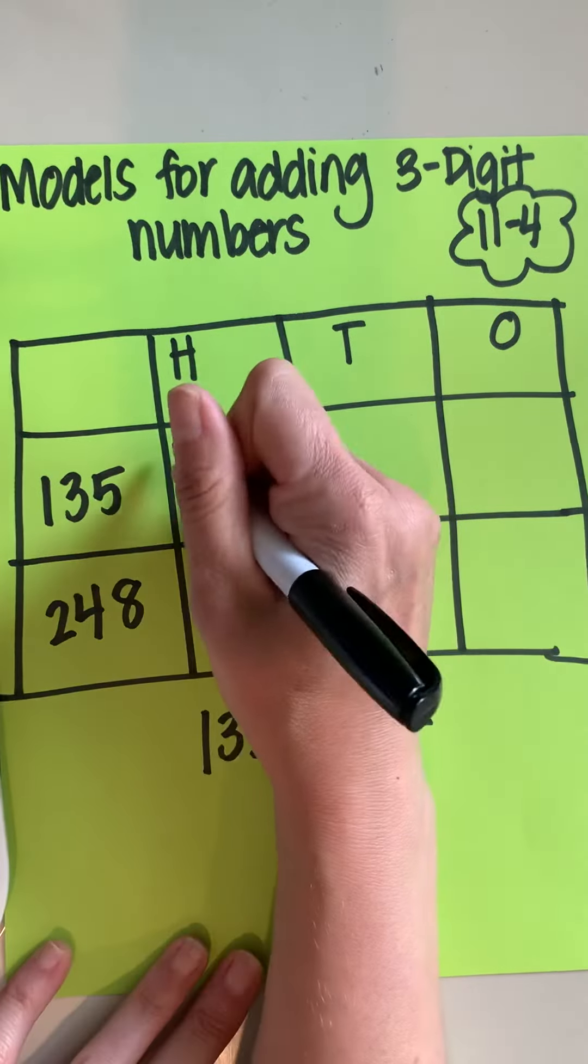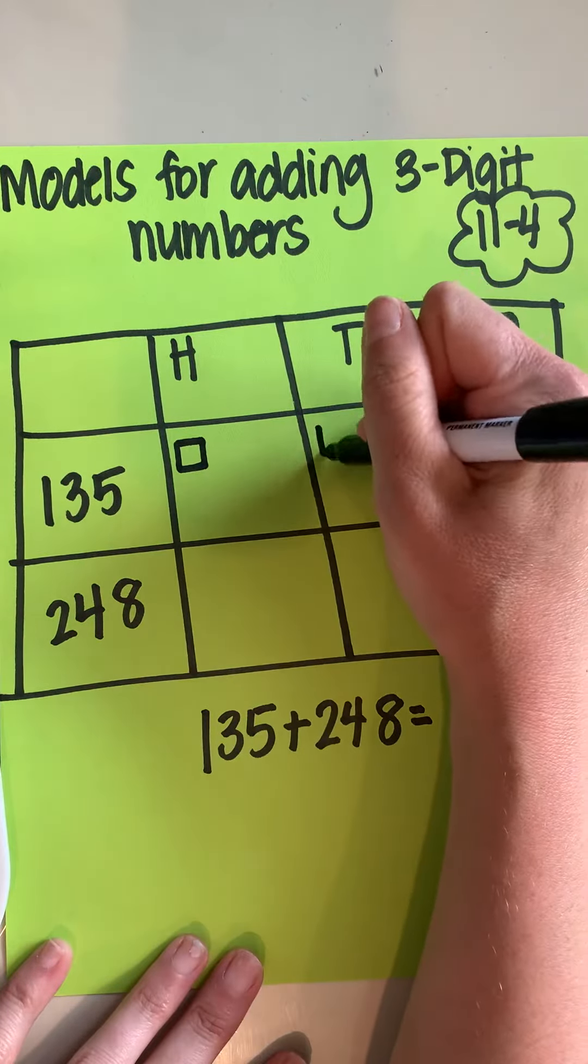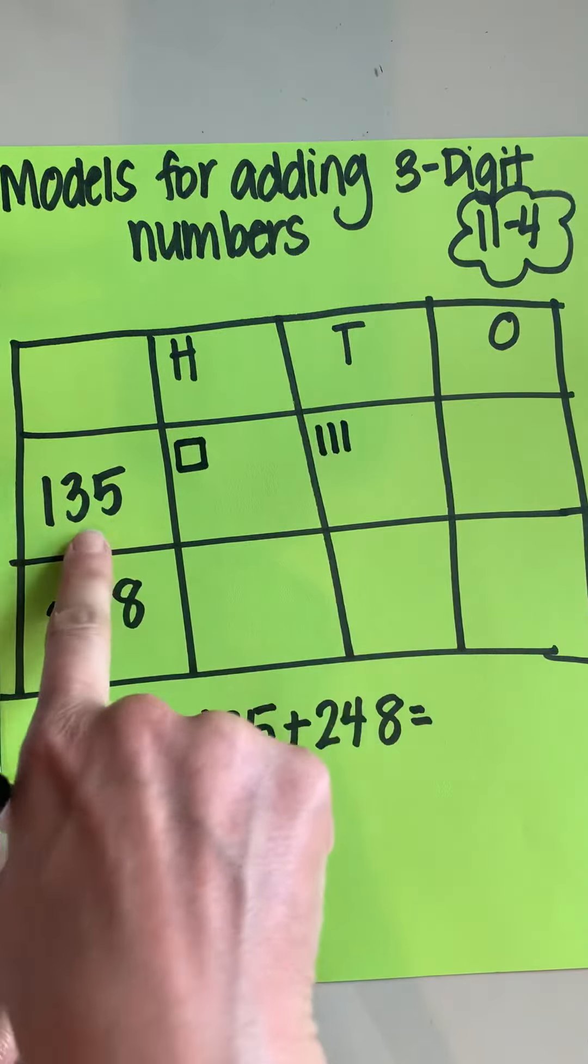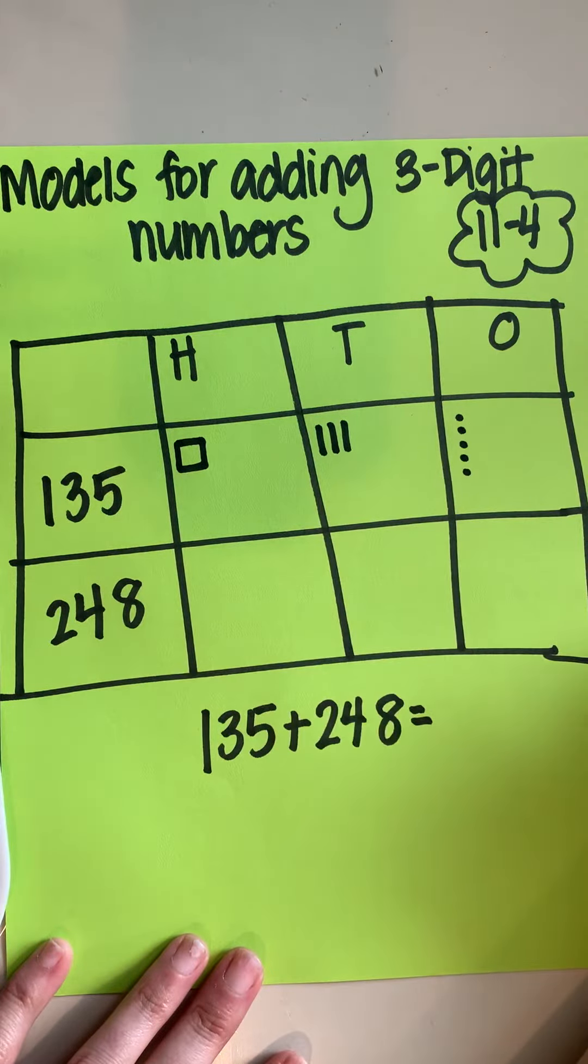For 135, I have 100, I have one, two, three tens, and then I have five ones. One, two, three, four, five.